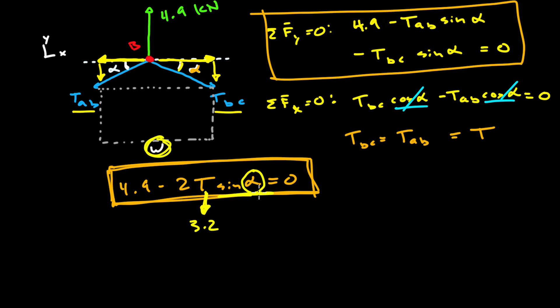So if we go ahead and solve for alpha in this equation well that tells us that alpha has to be the arc sine or the angle whose sine is 4.9 over 2 times 3.2 which is 6.4 which is equal to 49.96 degrees or let's just call it 50 degrees to be conservative. So what this is actually saying is that if the angle alpha gets any less than 50 degrees the tension in the cable will get so high that it snaps.